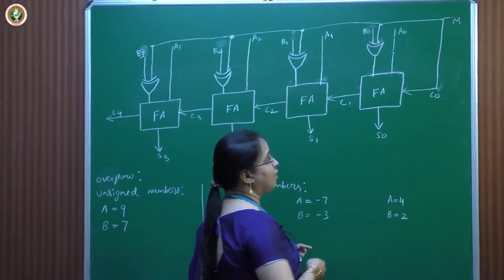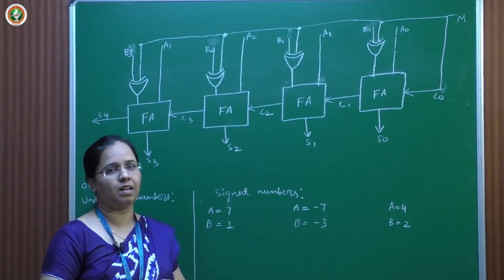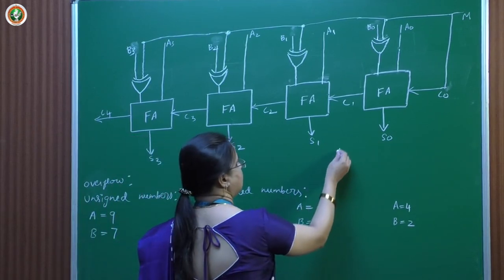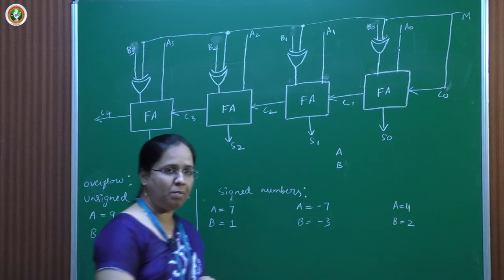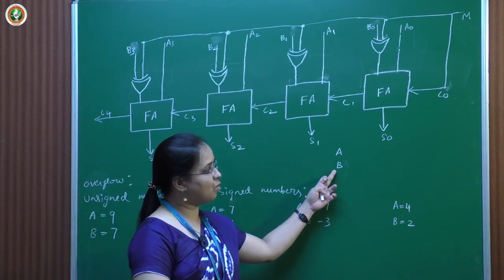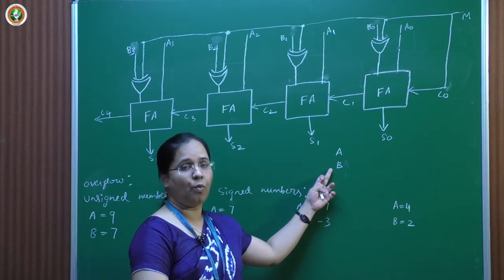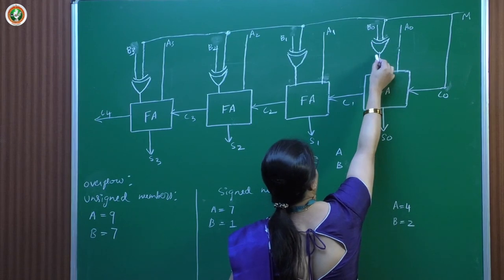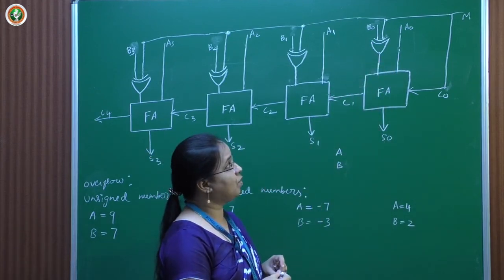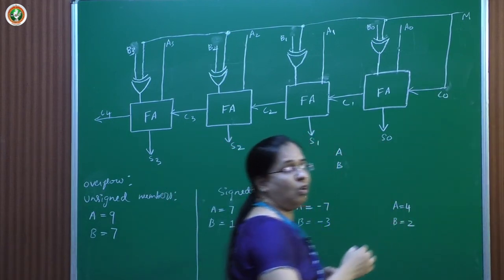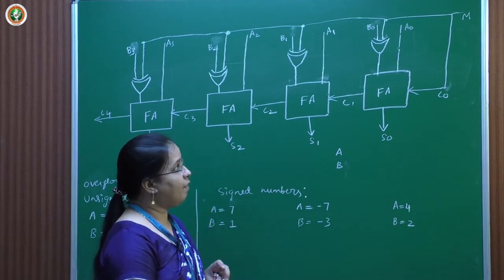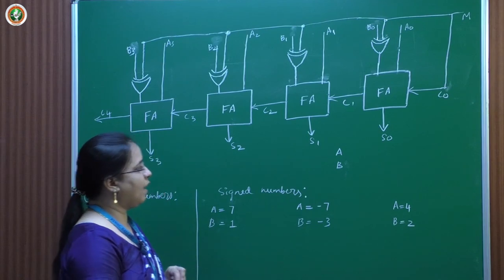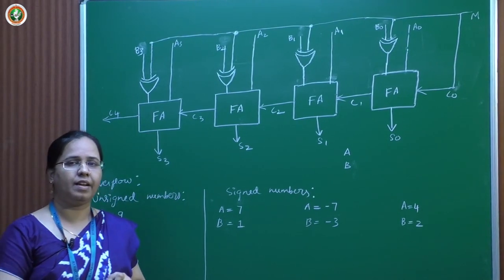Whenever we want to perform subtraction, it can be done with the help of addition using the 2's complement number. We keep the first input A as it is, then take the 2's complement of the second number B by taking the 1's complement and adding 1 to it. This operation is performed with the help of XOR gates given to the B inputs. When M is 0 the circuit acts as an adder, when M is 1 it acts as a subtractor. In the same circuit we need to include logic to identify overflow.